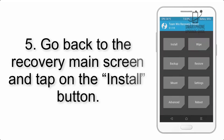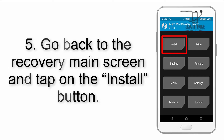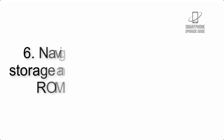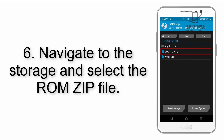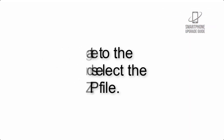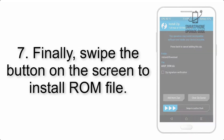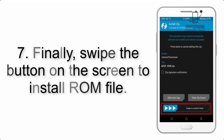Step 4: Swipe the button to wipe the device. Step 5: Go back to the recovery main screen and tap on the Install button. Step 6: Navigate to the storage and select the ROM zip file. Step 7: Swipe the button on the screen to install the ROM file.